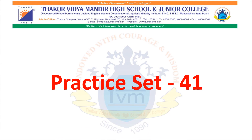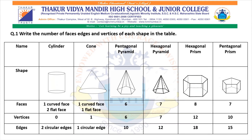Practice Set 41. Question 1: Write the number of faces, edges and vertices of each shape in the table. Cylinder: one curved face and two flat faces, no vertex, two circular edges. Cone: one curved face and one flat face, one vertex, one circular edge.